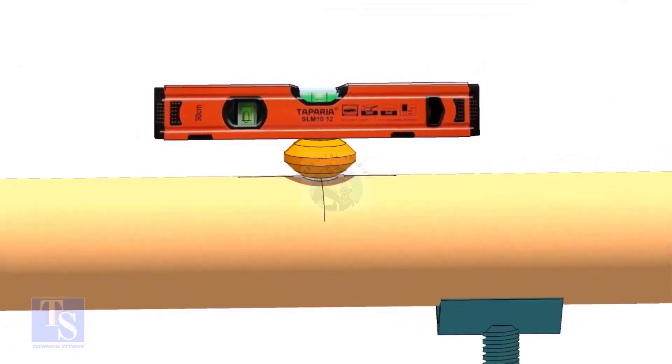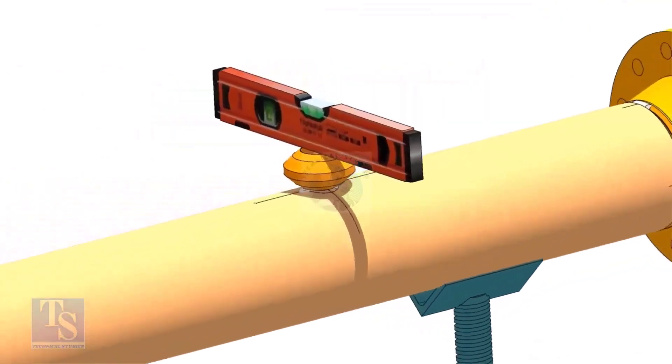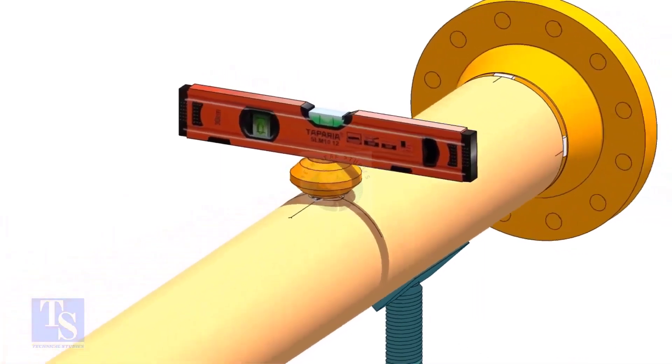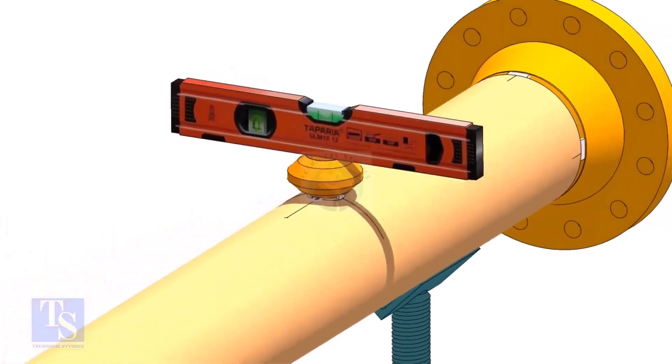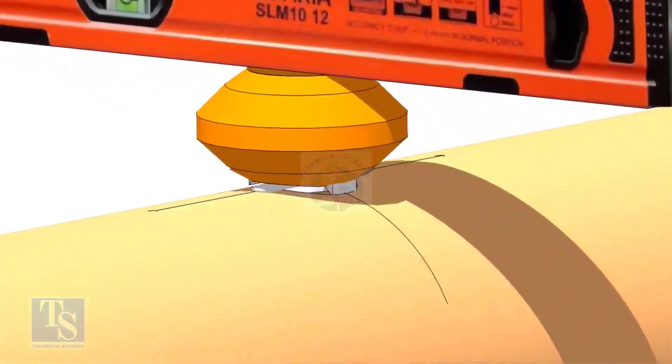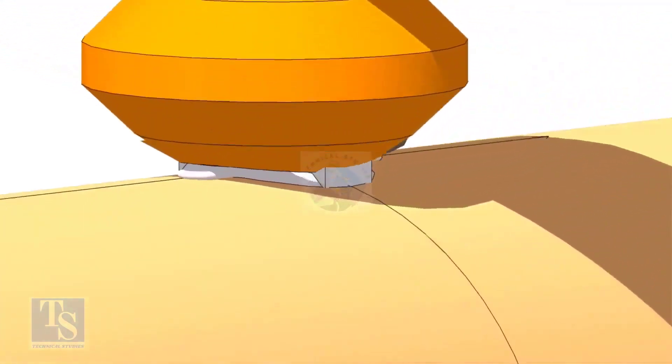Check the level from both sides. Tack weld on the sides of the OLED. Remove the gap rod. Check the level again.